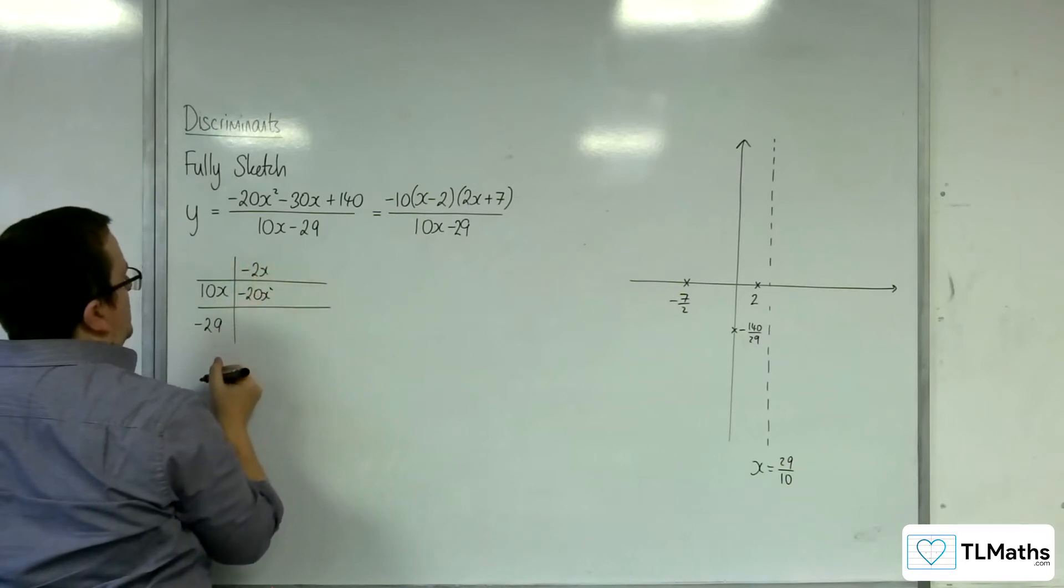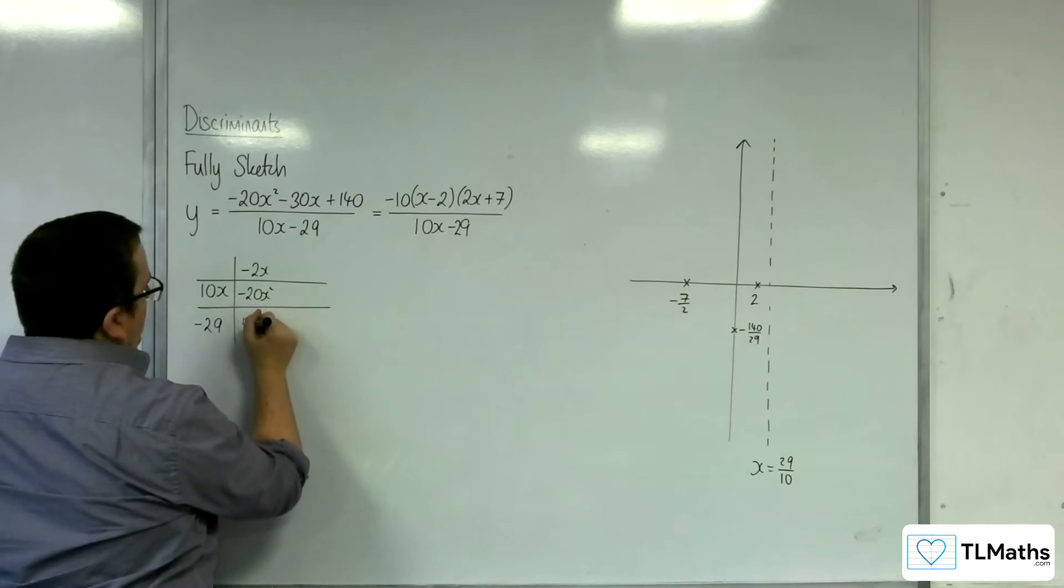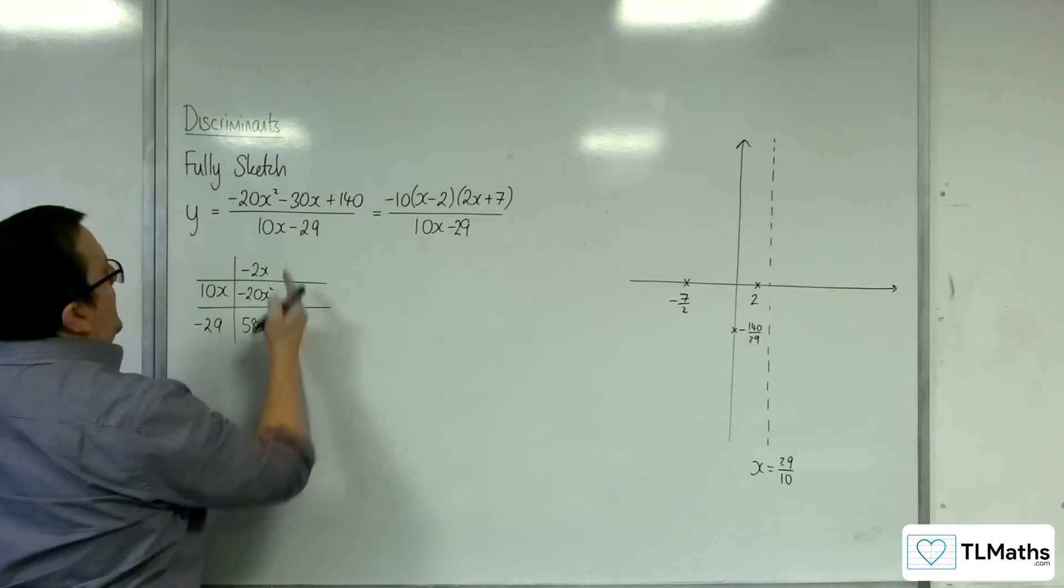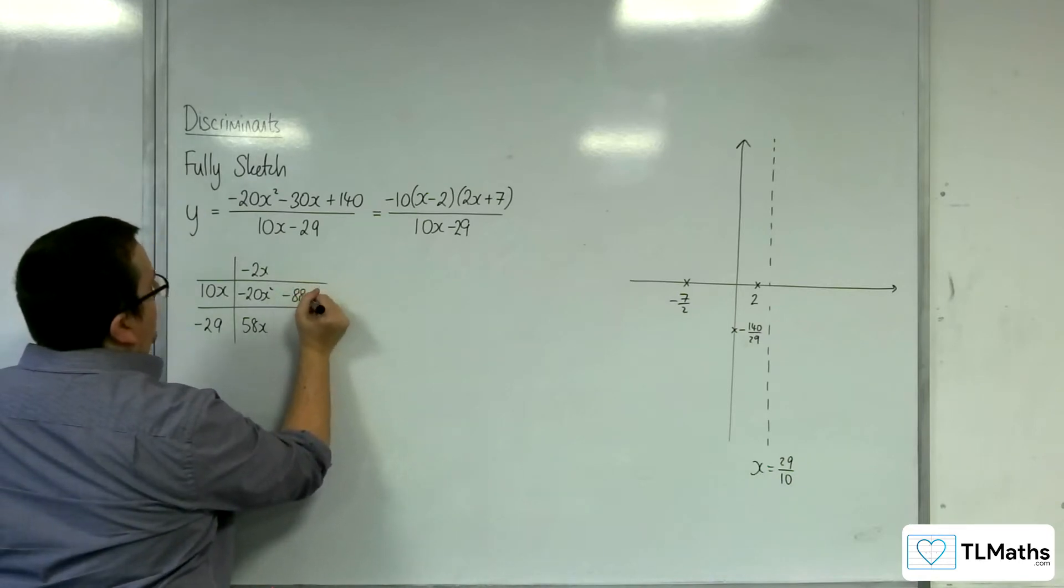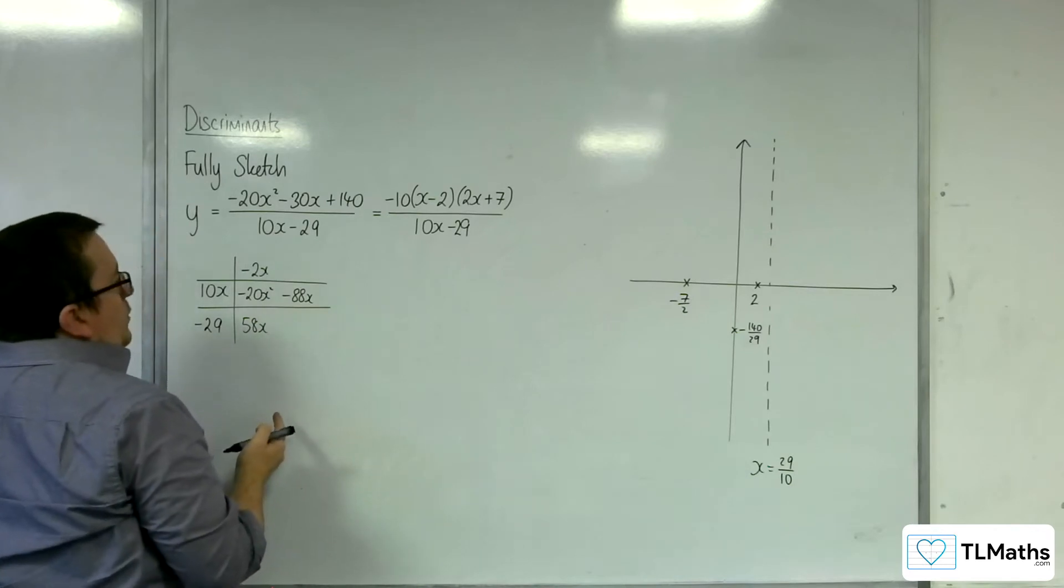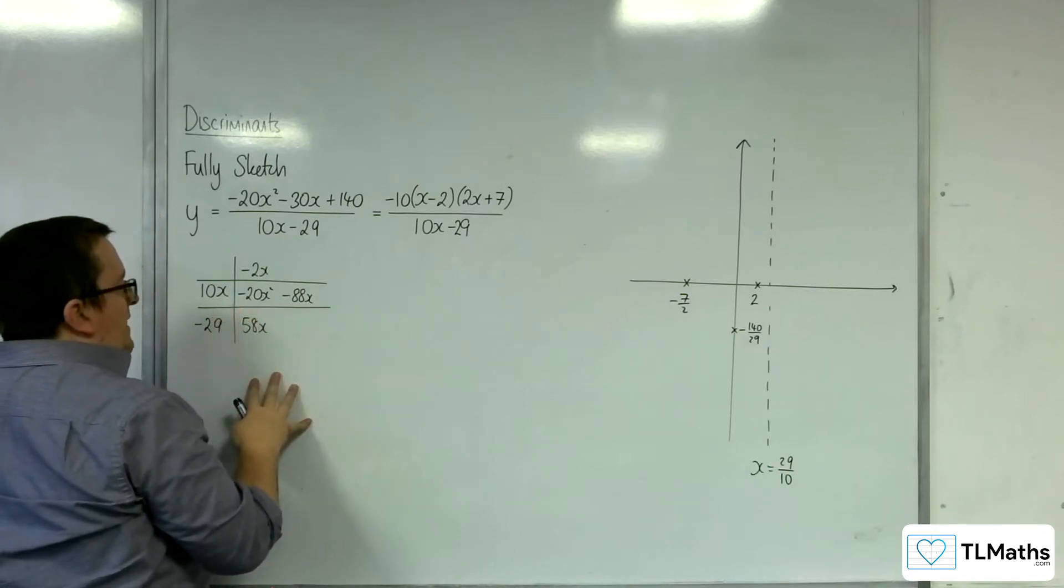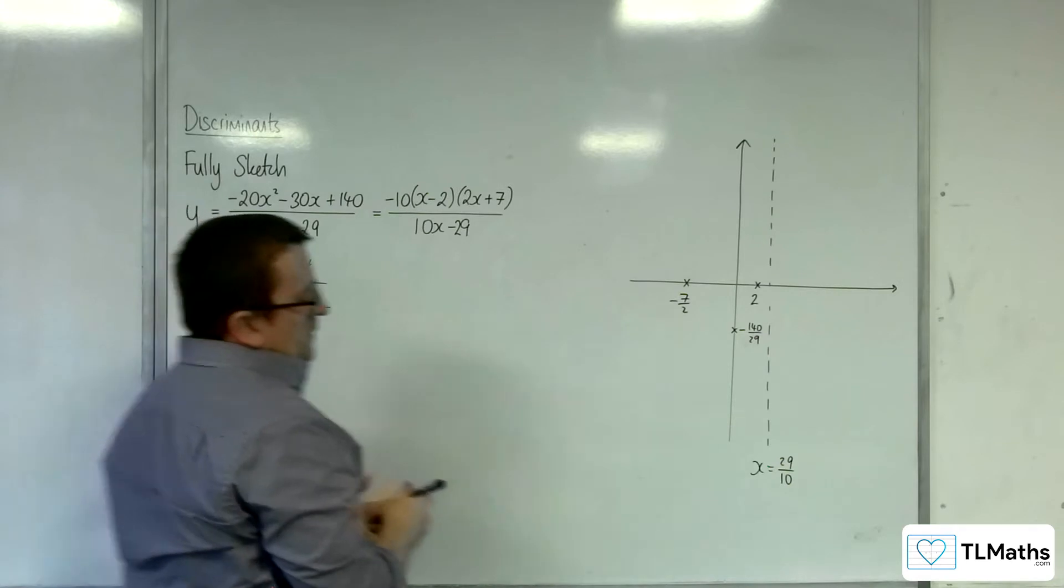Minus 2x times minus 29 is 58x. We need minus 30x. So, I'm going to have to take away 88x. So, 10x into that goes minus 88 over 10, which is minus 44 over 5.